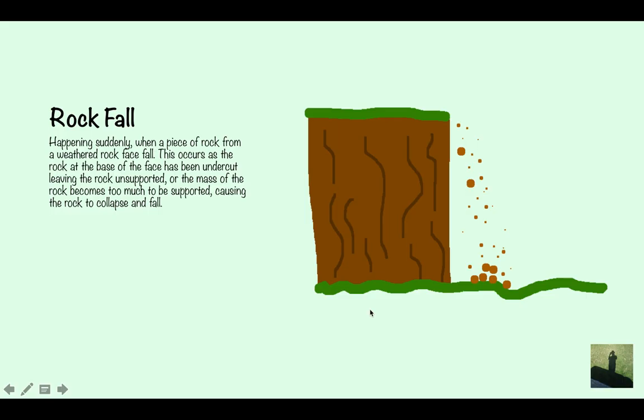Rock fall. This happens really suddenly and it's when a piece of rock from a weathered face falls. This occurs because the rock at the base of the face has been undercut leaving the rock unsupported. The mass of the rock becomes too much to be unsupported and it causes the rock to collapse and fall. This is basically just gravity working on the rock and pulling it down.